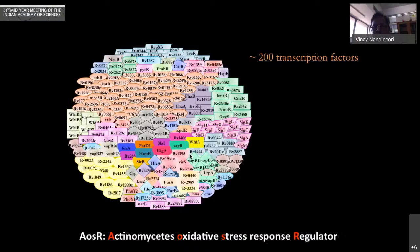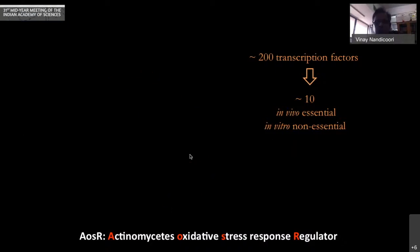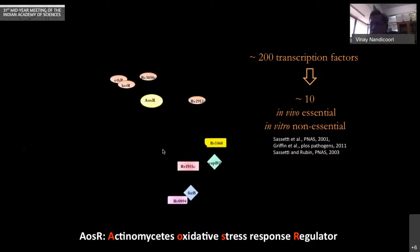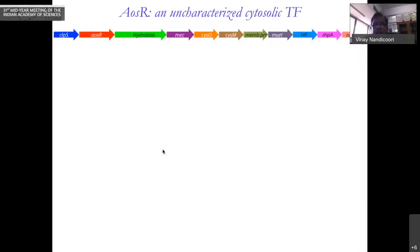We mined the transcription factor database and found that in vitro refers to bacteria growing in culture, while in vivo is growing inside the host such as mice. There are approximately 10 transcription factors that are not essential for growth outside, but are essential for growth in the host. Out of which only one was found to be specific to actinomycetes, which MTB is part of. So we went ahead and started characterizing this transcription factor.